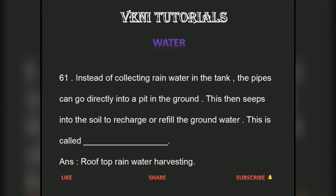Instead of collecting rainwater in the tank, the pipes can go directly into a pit in the ground. This then seeps into the soil to recharge or refill the groundwater. This is called rooftop rainwater harvesting.